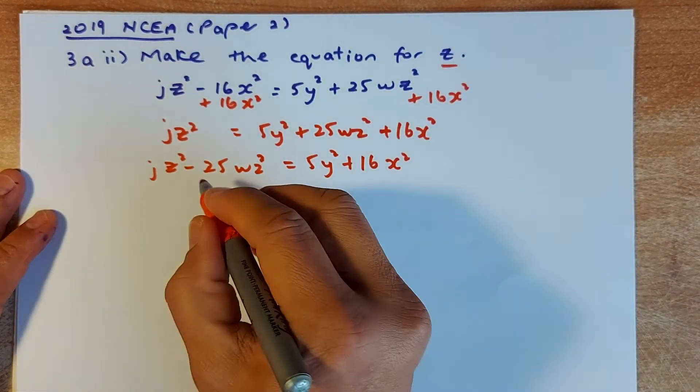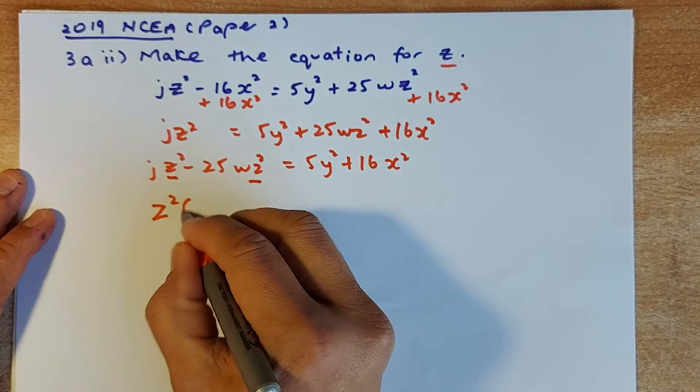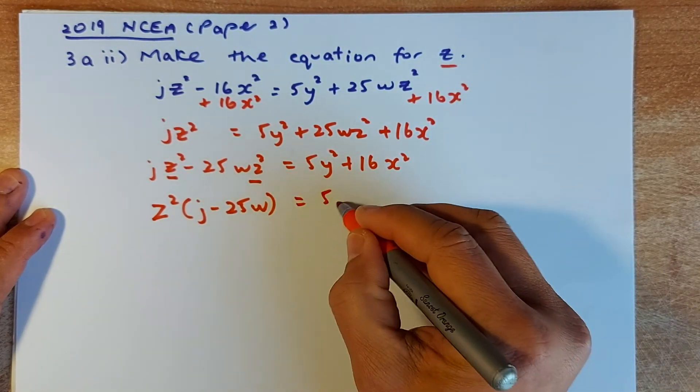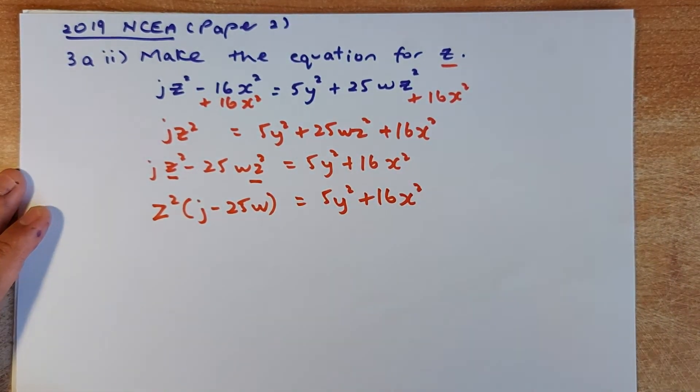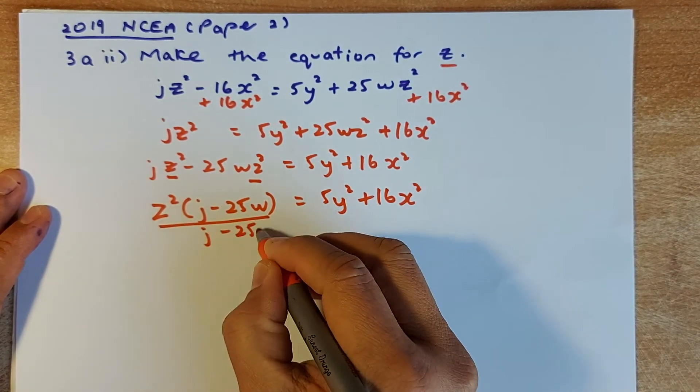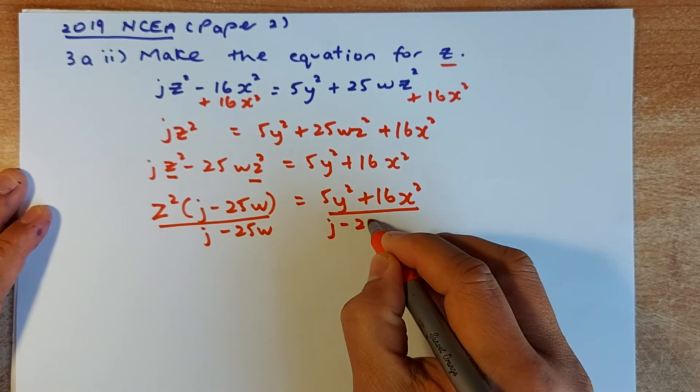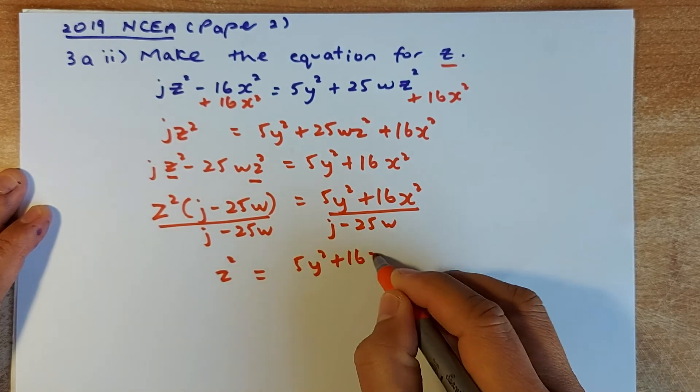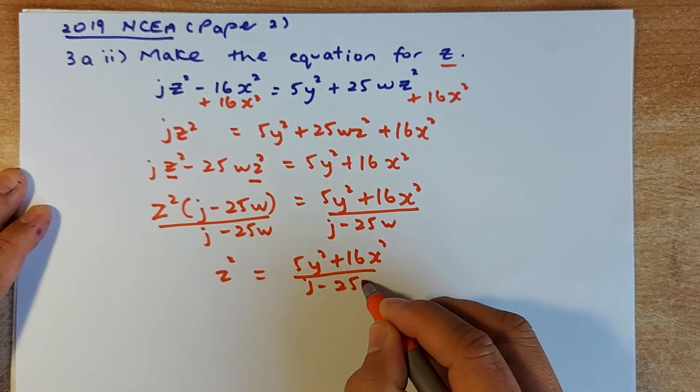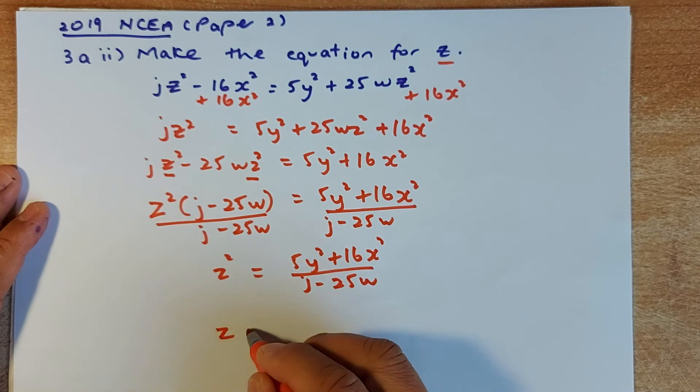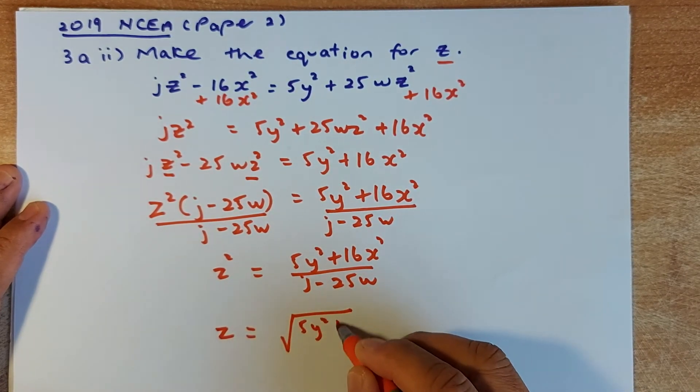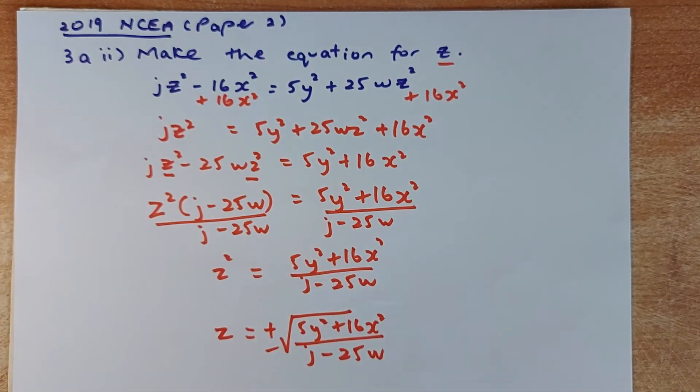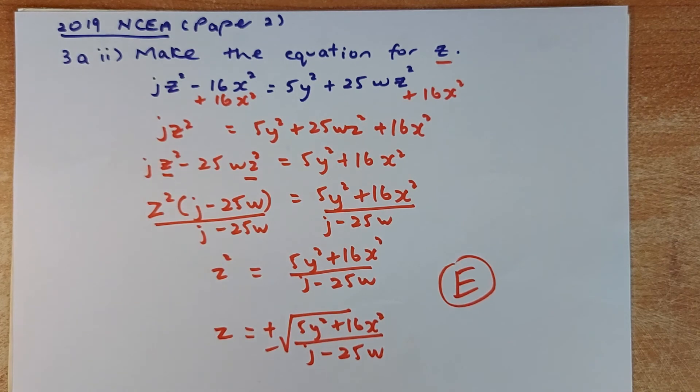Now you're going to factorize the Z². Because these are Z² and Z². So you're going to factorize Z²(J - 25W) is a common factor, equals to 5Y² + 16X². And because it's a square, the reverse of a square is the square root. Z equals to ±√(5Y² + 16X²) / (J - 25W). And most likely, you have to put a plus minus. And that will give you an excellence in NCEA level 1.